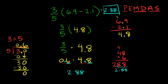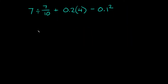Alright, hopefully that wasn't too bad. Let's do one more example. Here I have 7 divided by 7 tenths, plus 0.2 times 4 in parentheses, minus 0.1 squared. This is pretty complex, but again you always start at the same place — your order of operations, PEMDAS.